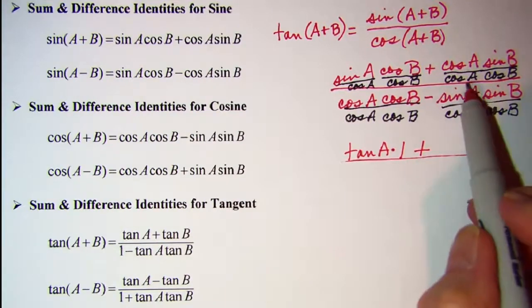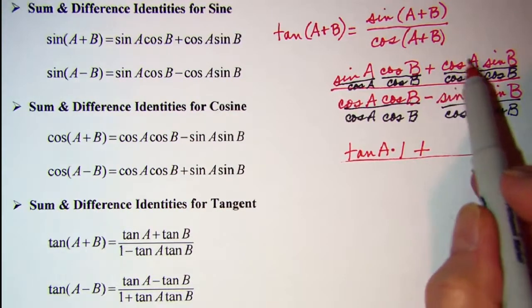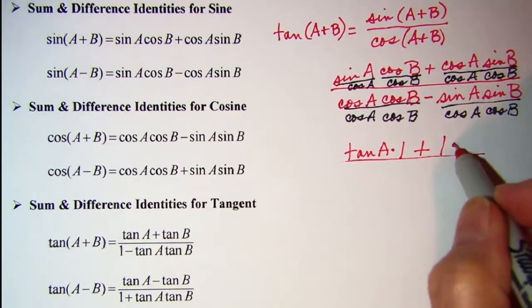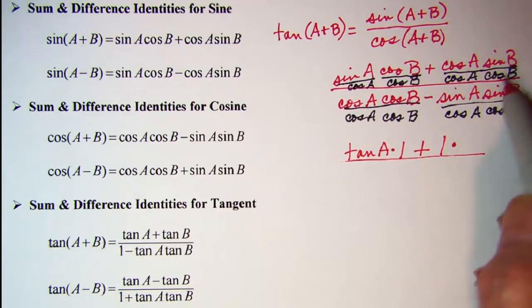Plus this fraction, cosine A over cosine A, that's one. Times, and then sine B over cosine B, that's tangent B.